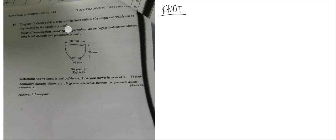First thing is, okay, diagram 17 shows a side elevation of the inner surface of a unique cup, which can be represented by the equation y equals to Ax power of 3. I find this question quite tough because if you want to find volume using integration, you always need to have something like y squared and x squared. But in this question, what you have is x power of 3. The second thing I think makes this question tough is, if you don't know how the equation will look like, it will be very difficult to imagine.